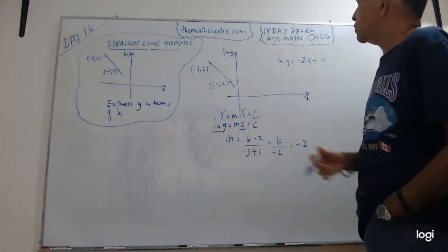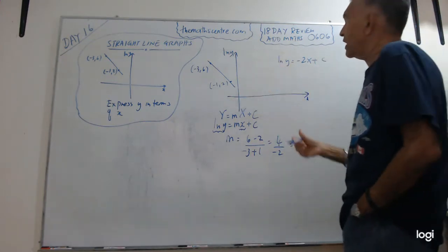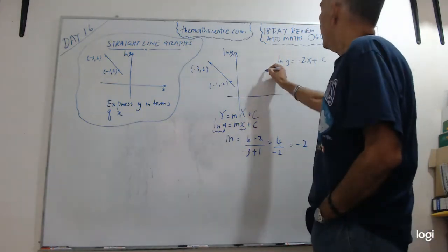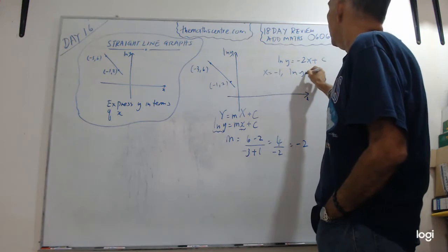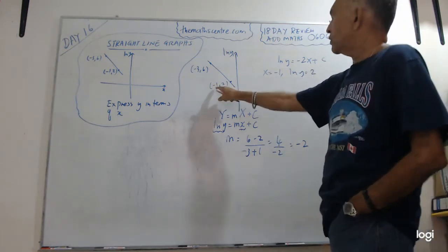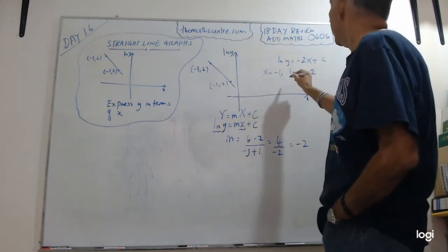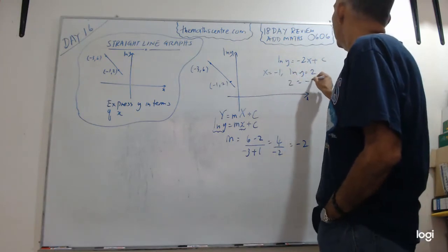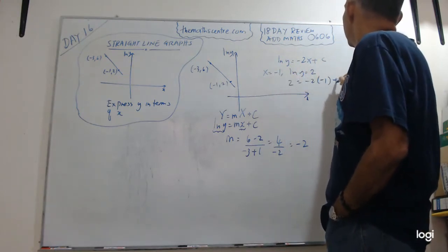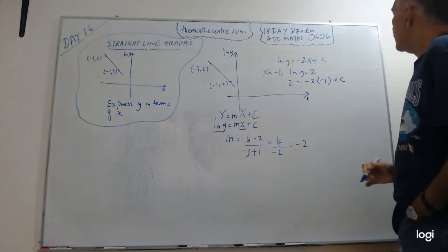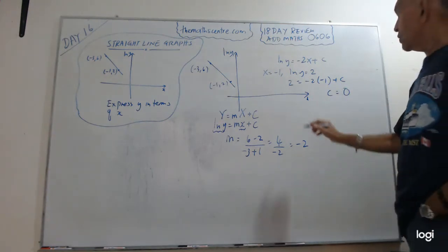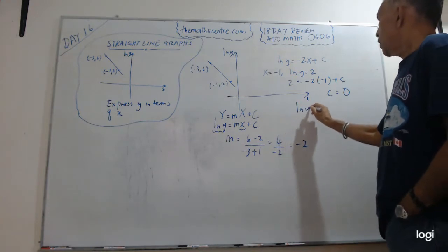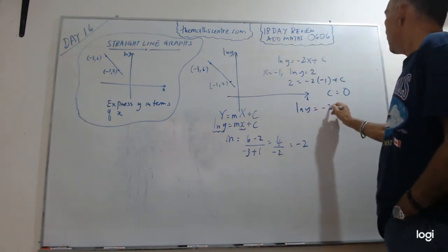Now this line passes through two points. You can pick anyone that you like. So when X equals to minus 1, ln Y equals to 2. When X equals to minus 1, ln Y equals to 2. Let's C equals to 0.